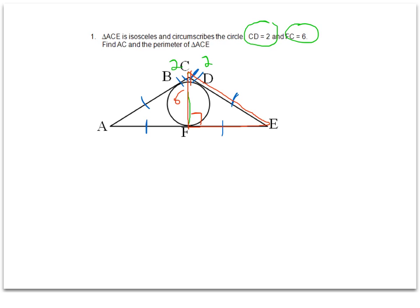We're told that segment FC equals 6, so that gives me the short side of my right triangle. Now I'm going to fill in the missing information for the long side of the right triangle and the hypotenuse as well.